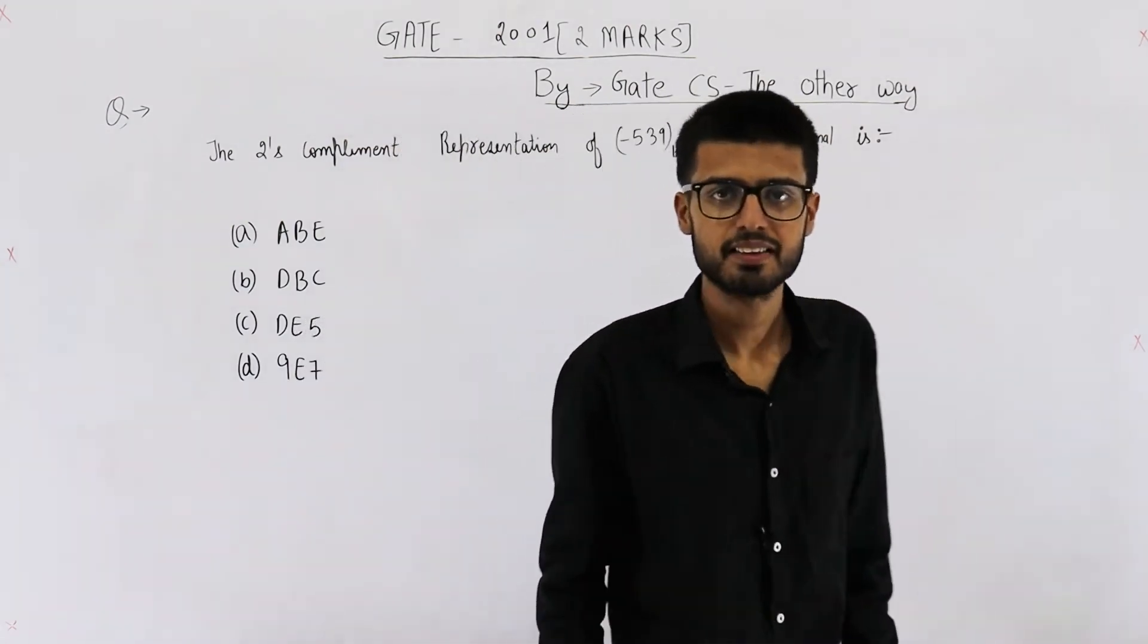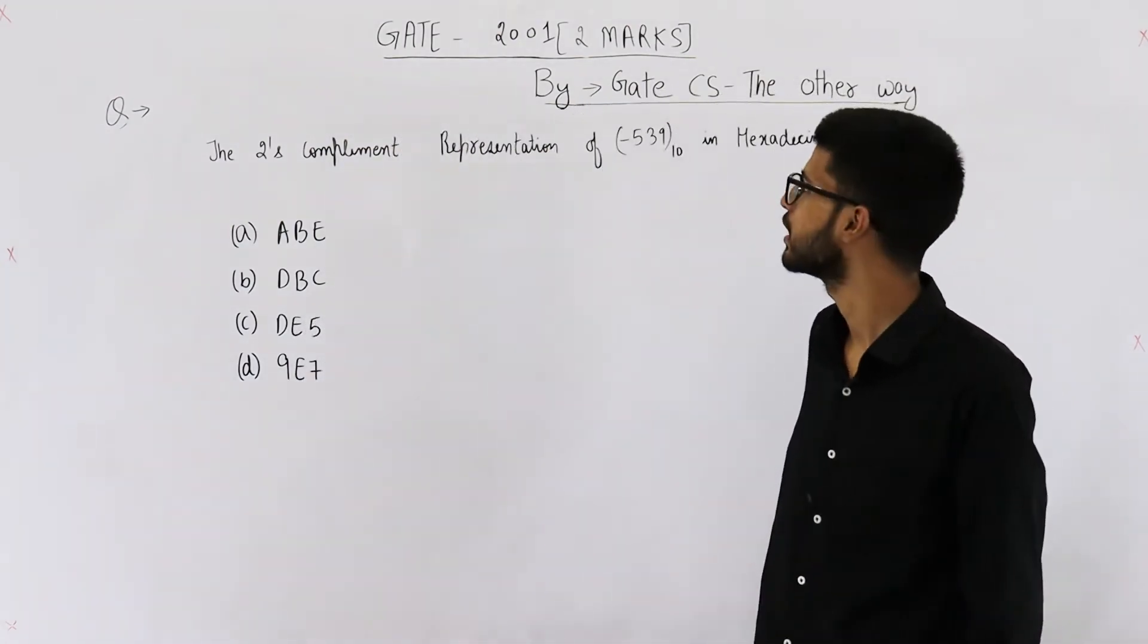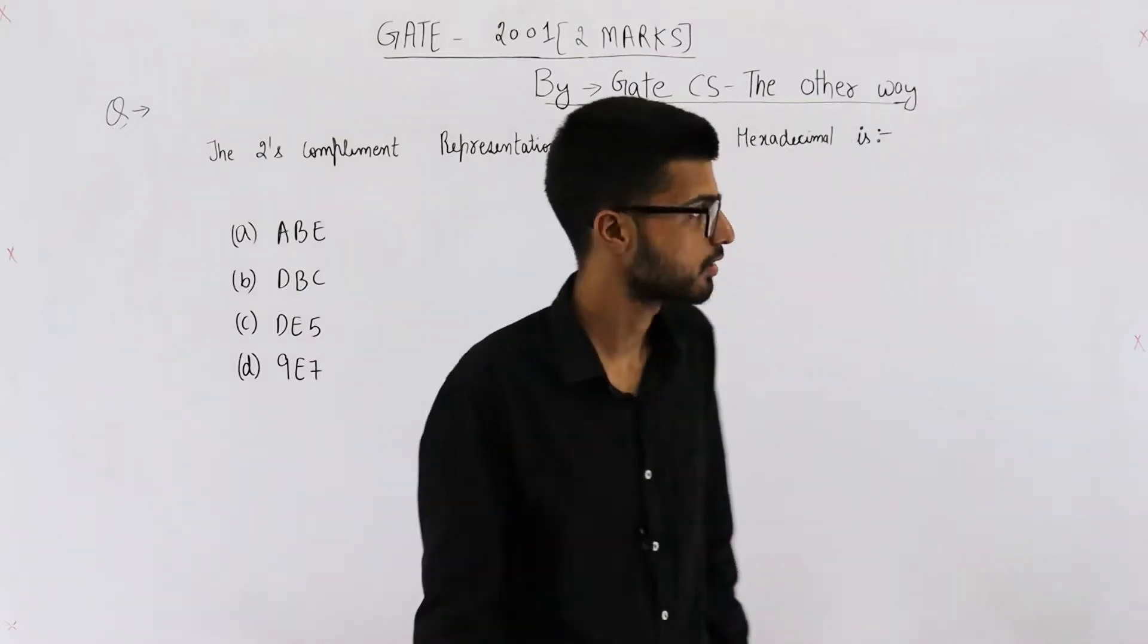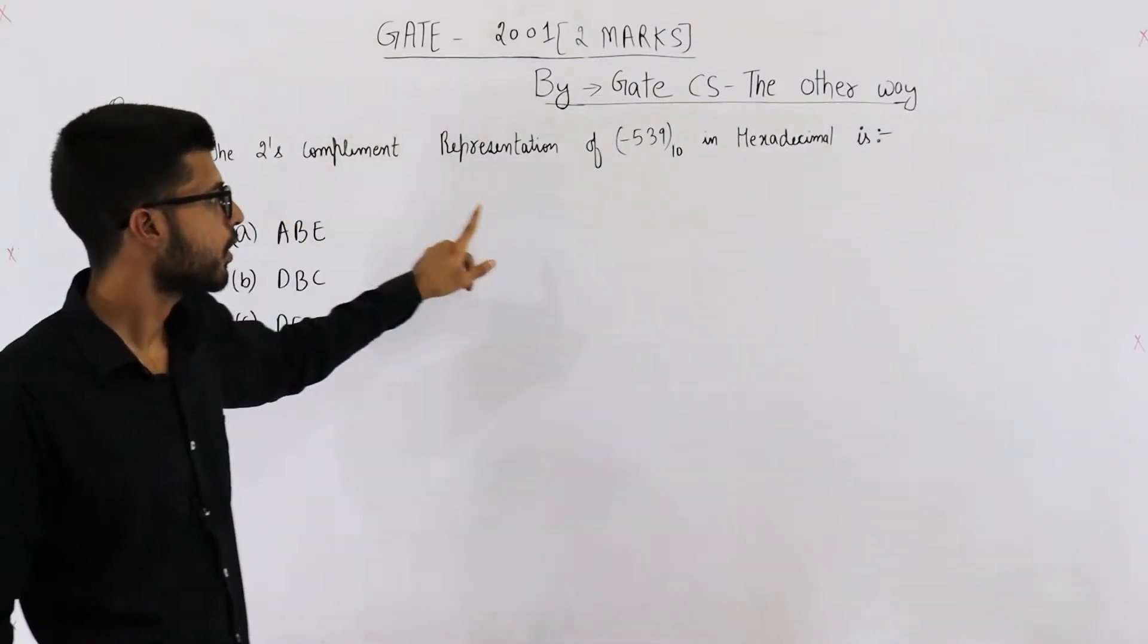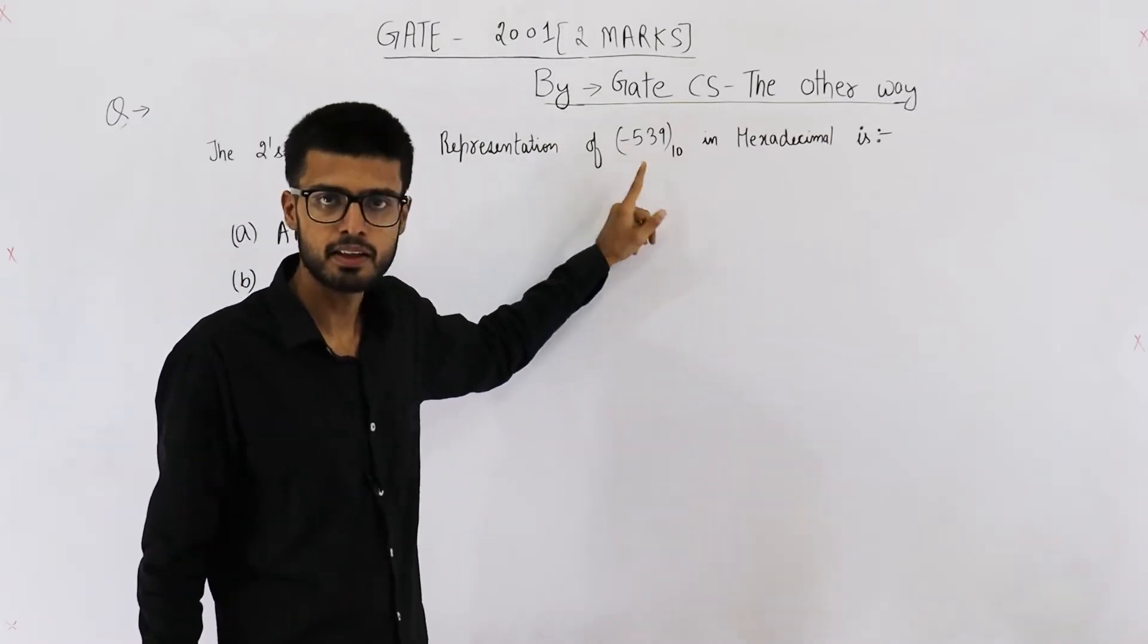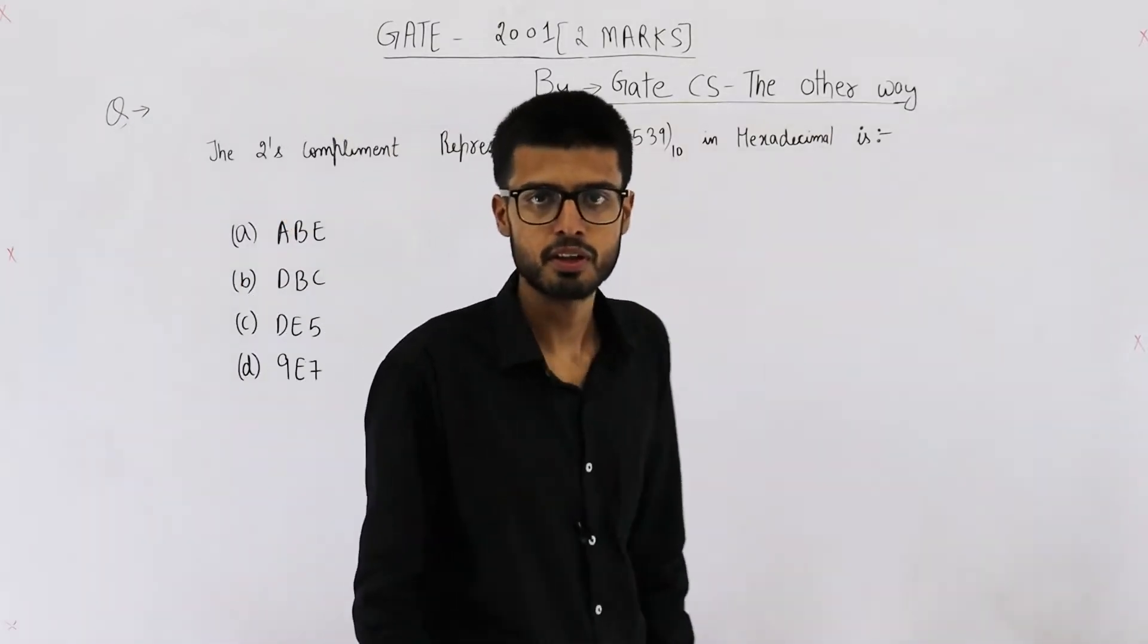Hello dear students, welcome back. The question is from GATE 2001 exam. It's for two marks. Two's complement representation of minus 539 in hexadecimal notation is...